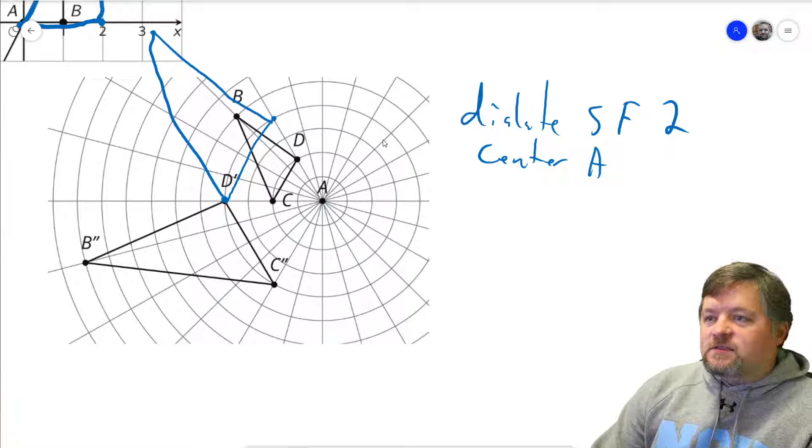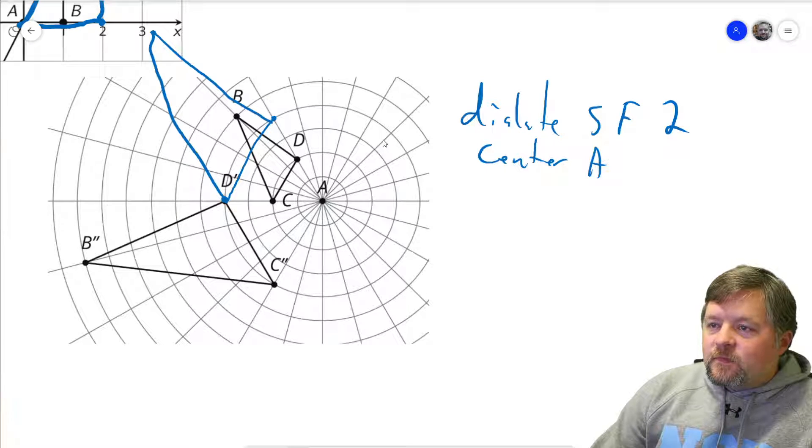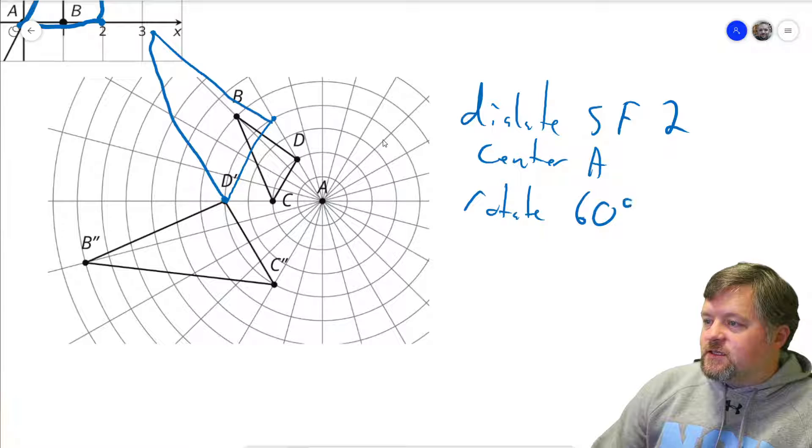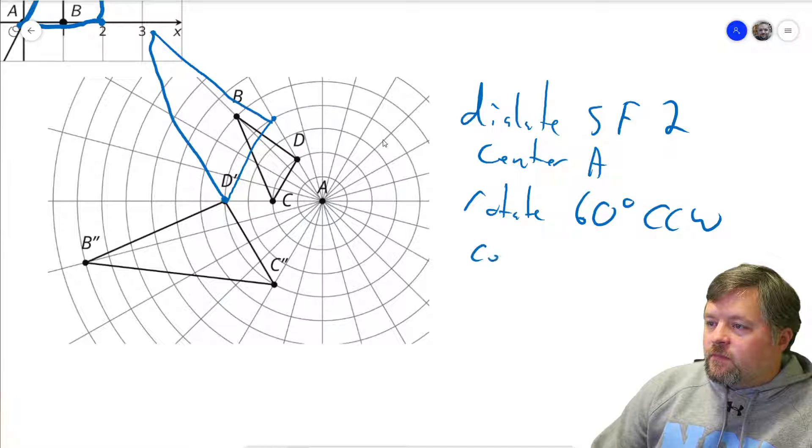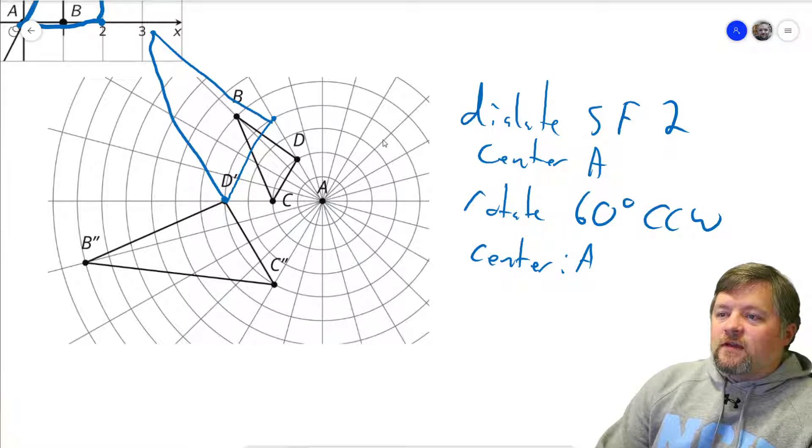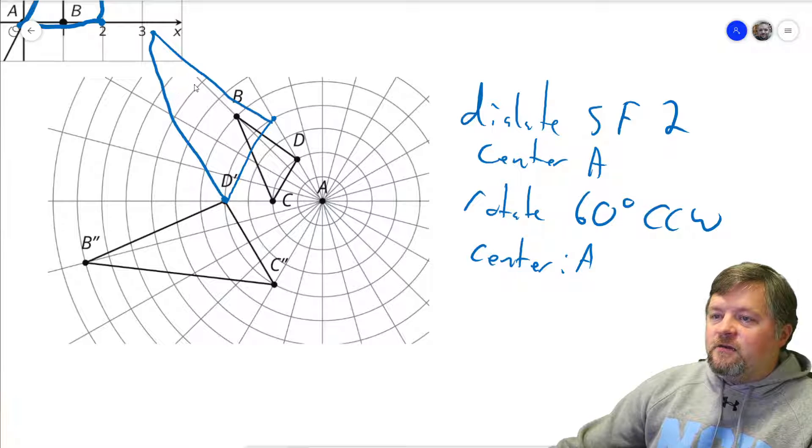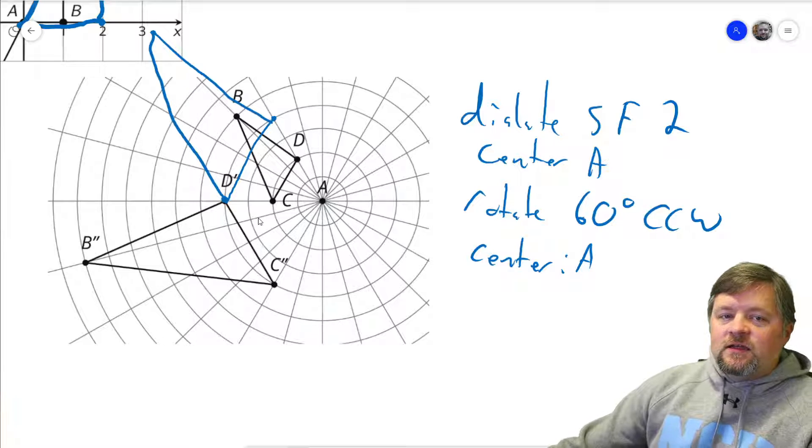Then we need to rotate this. Well, how much do we need to rotate it? Each one of these lines works out to 15 degrees. So 15, 30, 45, 60 degrees. So we want to rotate 60 degrees counterclockwise, center of rotation at A. So if we take BDC, dilate it with a scale factor of two and a center of A, that puts it up here. Then we rotate it 60 degrees counterclockwise. That puts the original figure onto the other one, showing that the two figures are similar.